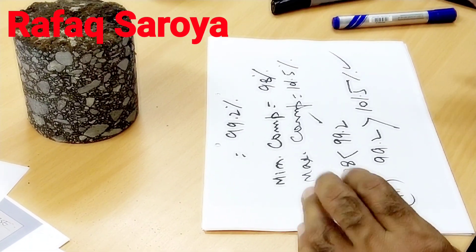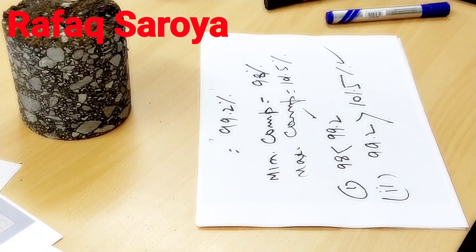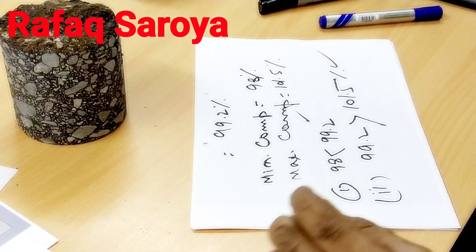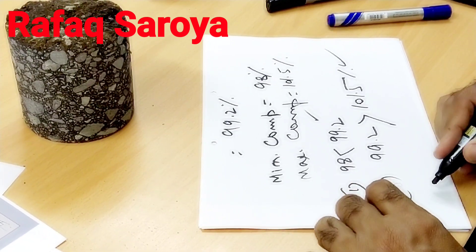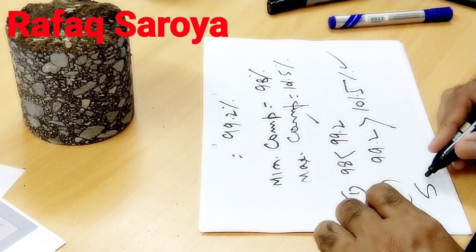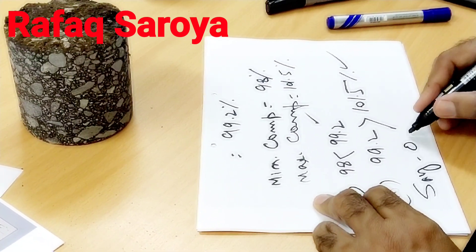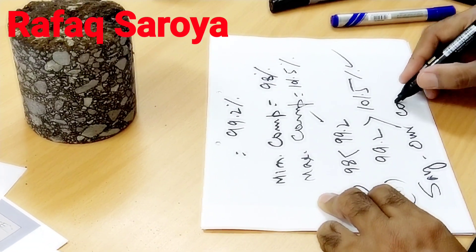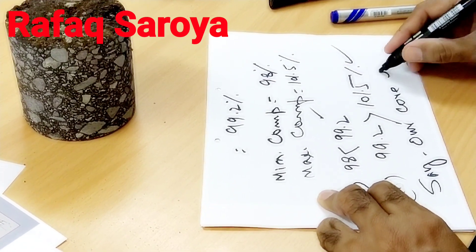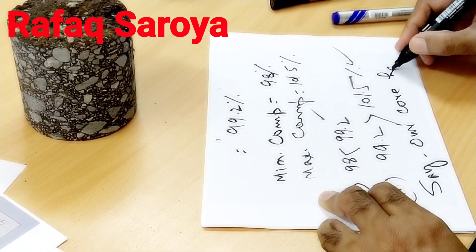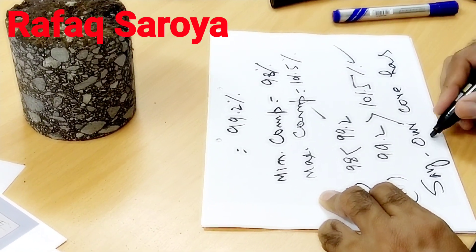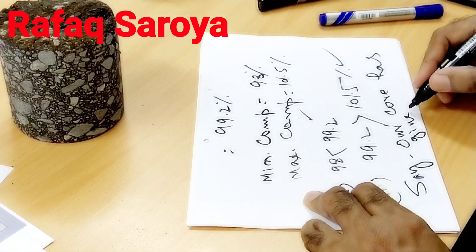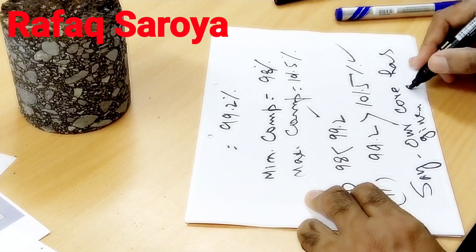When both conditions — minimum and maximum parameters — are satisfied, we can say that our core has given a good result. The core cut from the site has demonstrated good compaction.